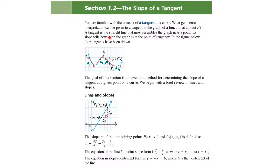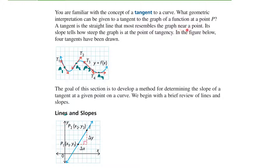A tangent line is the straight line that most resembles the graph near a point. Its slope tells how steep the graph is at the point of tangency. By looking at the graph of the given function and drawing the tangents t1, t2, t3, t4 at points a1, a2, a3, a4, we see that the graph of the function near point a1 is similar to the graph of the line t1. Similarly, the graph of the function resembles t4 near point a4.